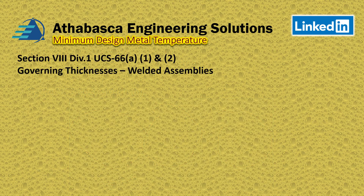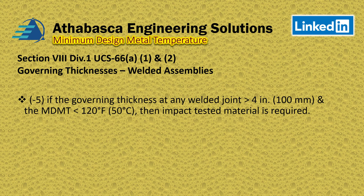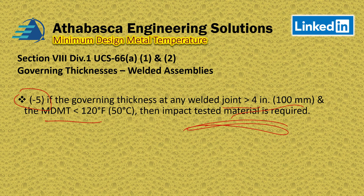A few more rules about welded assemblies: rule five says if the governing thickness of any welded joint is greater than four inches and less than minus 120°F, then impact testing is required for really thick joints. This has to do with the triaxial stresses found in very thick parts, which we touched on in an earlier video to understand why there are more restrictions for thicker parts.